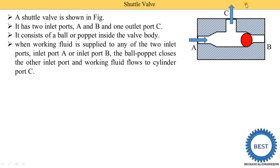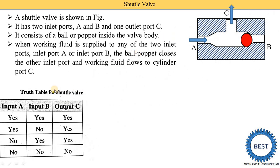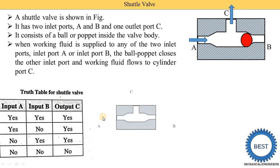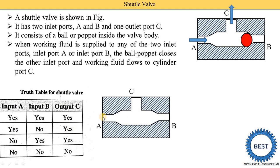This is the truth table for the shuttle valve. In case two: inlet port A is open, at which point inlet B is closed, and the output is present at C.